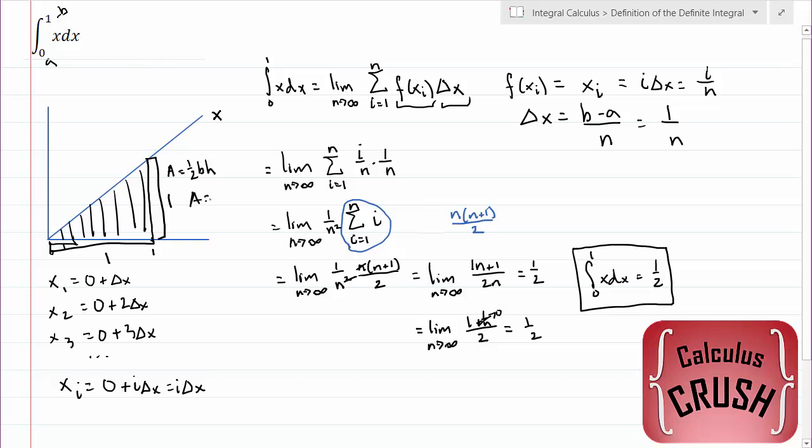So the area is 1 half times 1 times 1, which is 1 half. So we get the same thing using the area of a triangle. So there you have it.